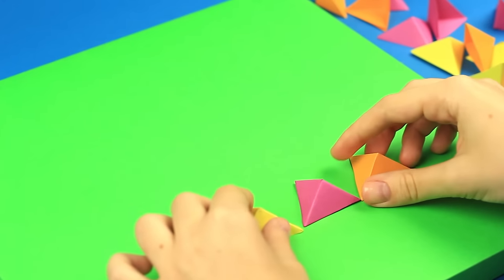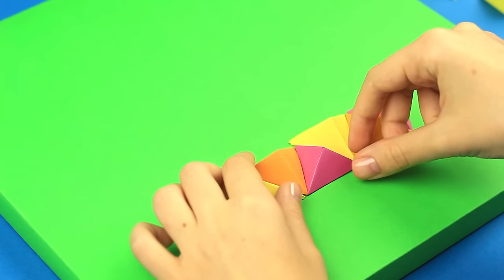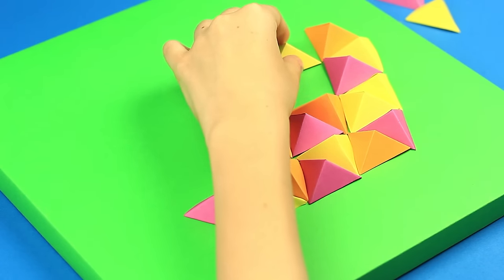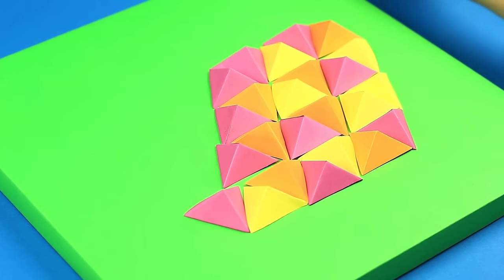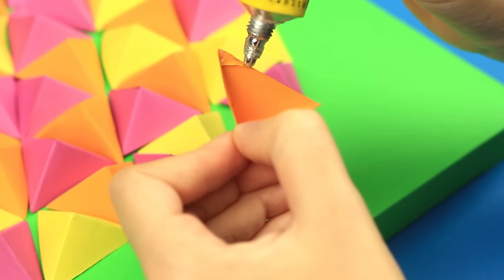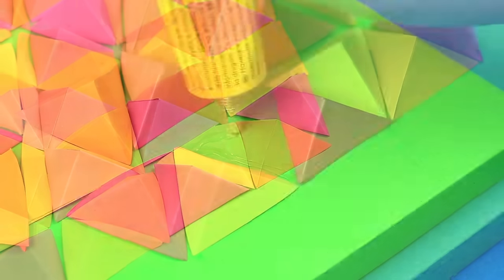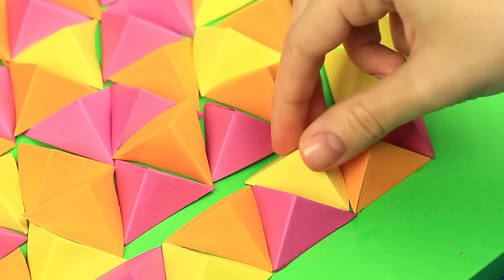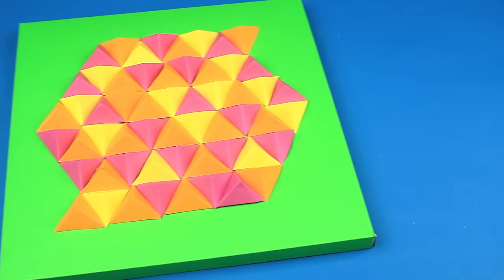Place the details on the frame. Form any pattern you like. We'll make an abstract one. Attach the pyramids with multipurpose glue. The colorful paper wall decor will become a cute interior accent.